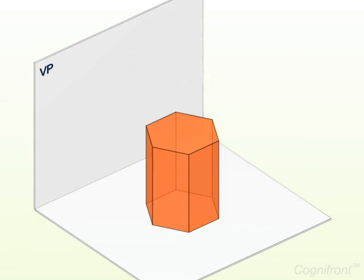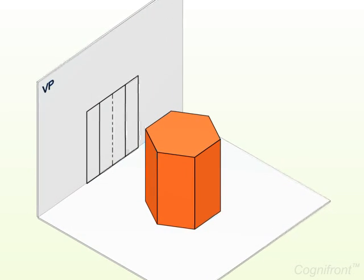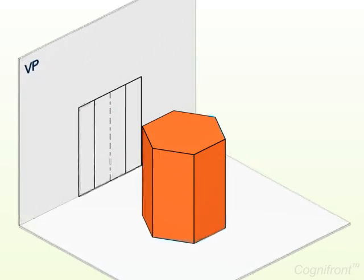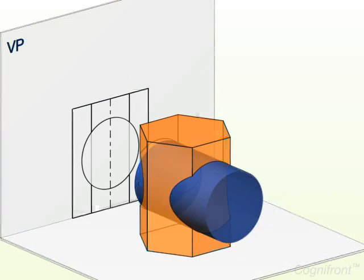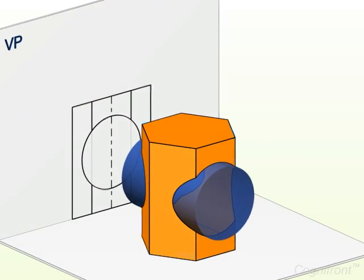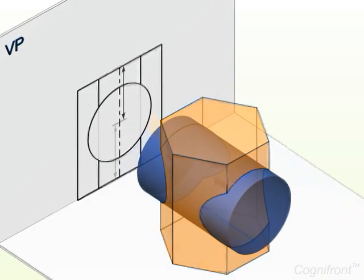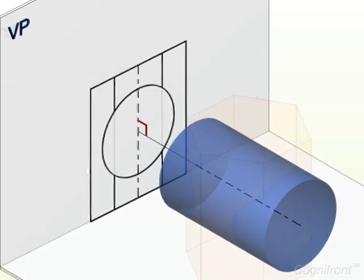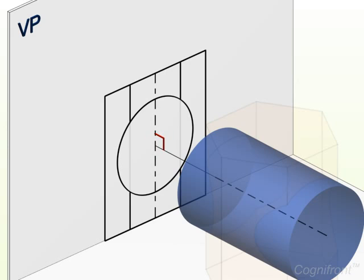Now, let's develop the surface of a hexagonal prism resting on HP. A circular hole is drilled completely through the prism bisecting the axis of the prism. The axis of the hole is perpendicular to the VP.